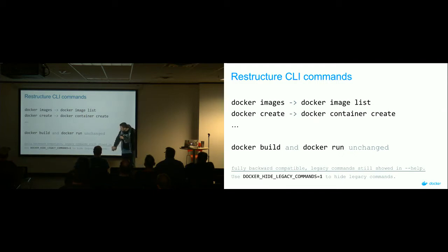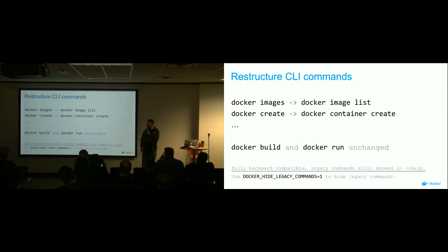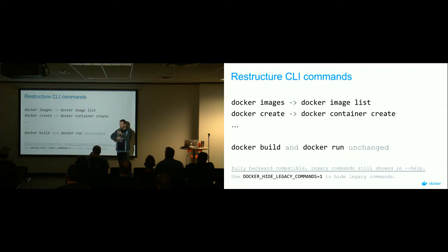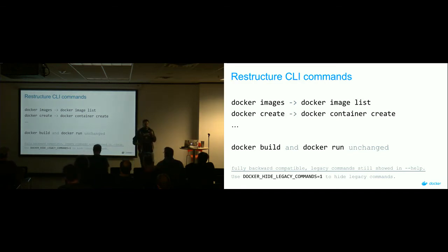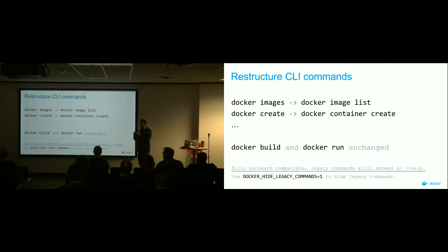In its current form in 1.13, if you do a Docker help, you're going to see everything. But if you're ready to take the jump and forget about the old way, you can set an environment variable and completely hide all that old stuff. Eventually, all that stuff will permanently go away. Right now they're in deprecation mode where they've got a mix of both, so they're not breaking everybody right out of the gate. You can adopt it as you see fit.